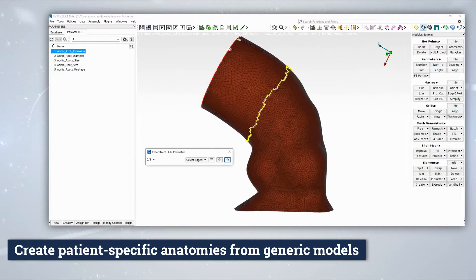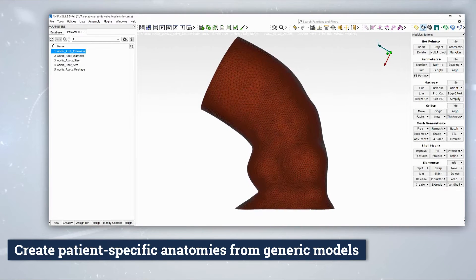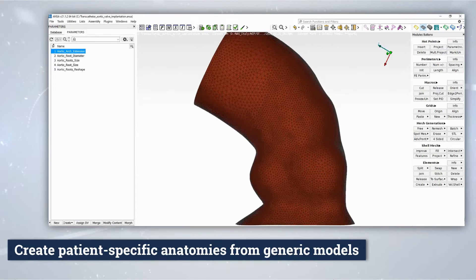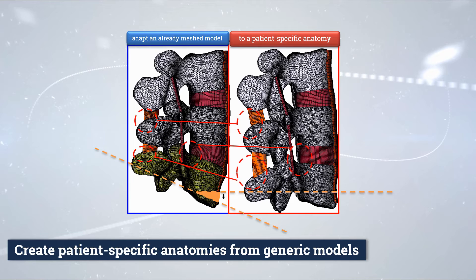Thanks to the morphing tool included in ANSA, the cumbersome and time-consuming model fitting procedure is sped up due to geometry parametrization. This approach is perfectly suitable when target surfaces are available and does not imply any restriction, since it can be applied on both geometrical and FE models whose integrity is always preserved.